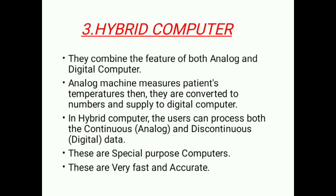The third one is hybrid computer. Hybrid computers combine the features of both analog and digital computers. The analog machine measures the pressure and temperature, then they are converted to numbers and supplied to the digital computer. In hybrid computers, users can process both the continuous and discontinuous — continuous means analog and discontinuous means digital. These hybrid computers are special purpose computers. They are very fast and accurate, and are used in scientific fields.